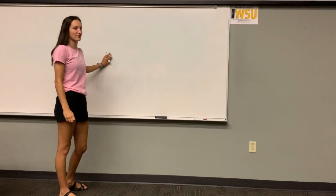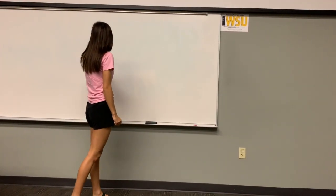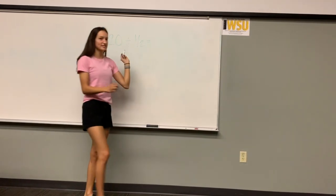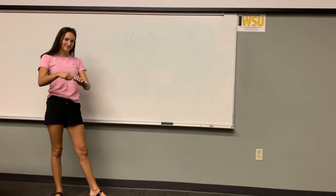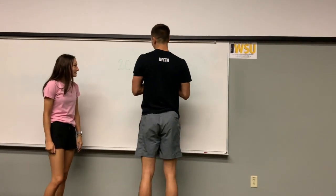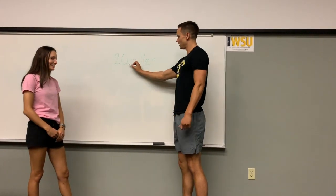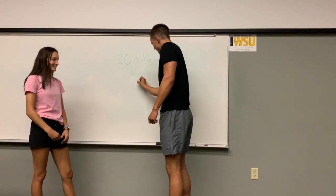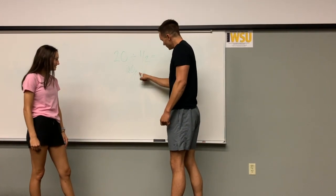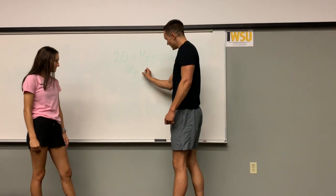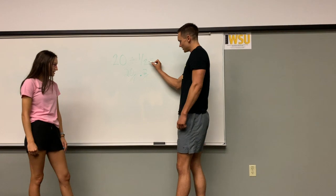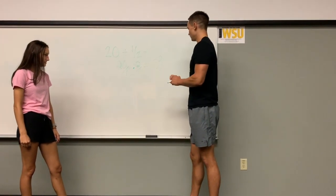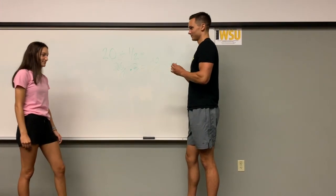Now we are going to do two practice problems with our other concept, starting with 20 divided by one half. Jake volunteered: any whole number has an imaginary 1 under it, so if we are dividing by one half we can switch it around and multiply by 2 over 1. That would make it 40 over 1, which equals 40. Awesome job, thank you Jake.